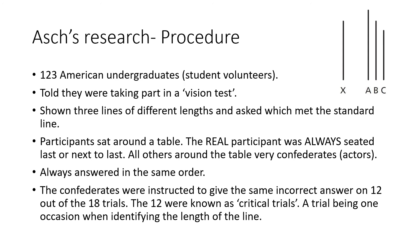Asch's procedure — you could be asked a six-mark AO1 question on just his procedure, so I've put this into key bullet points. He used 123 American undergraduates, all volunteers. He told them they were taking part in a vision test — which you can critique as deception, since it was actually to see whether they would conform. They were shown three lines of different lengths, and asked which matched the standard line (X).